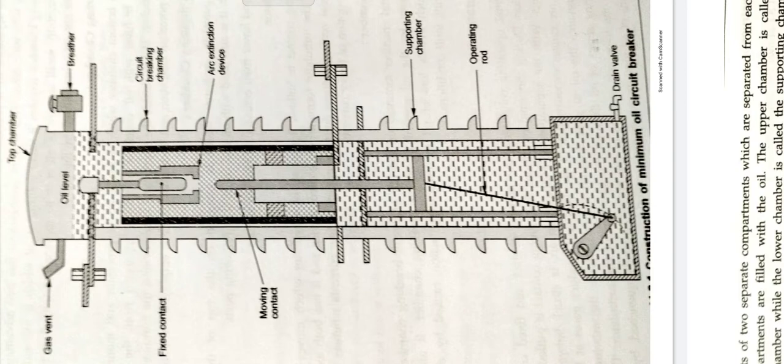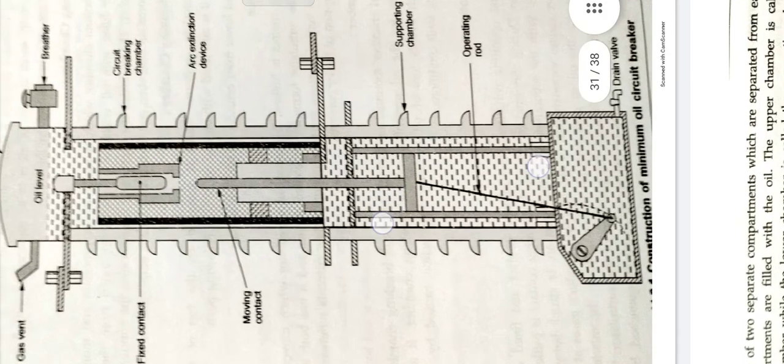Firstly, the circuit breaker chamber requires a small volume of oil which is just sufficient for arc extinction. And secondly, small amount of oil is to be replaced as the oil in the supporting chamber does not get contaminated by the arc.